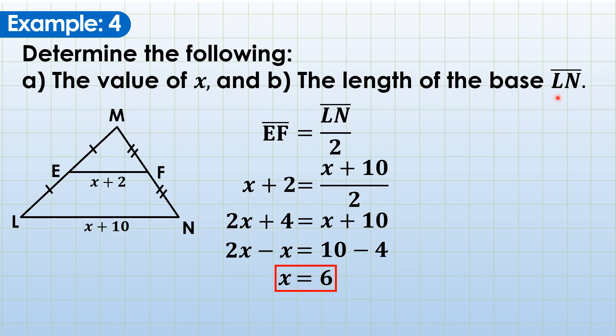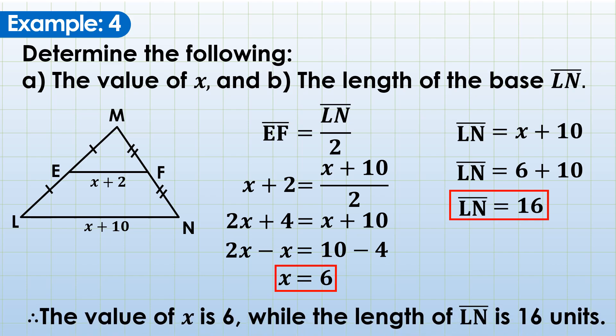We can now determine the length of base LN by equating LN to its corresponding algebraic expression, x plus 10. LN equals x plus 10. And then substitute, x becomes 6. So that's 6 plus 10, and 6 plus 10 is 16. So answer, conclusion, the value of x is 6, while the length of LN is 16 units. So how do we check? We can actually determine the actual value of EF. 6 plus 2 is 8. 8 is one half of 16.